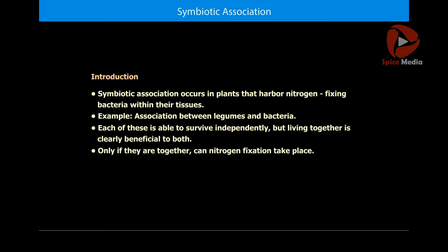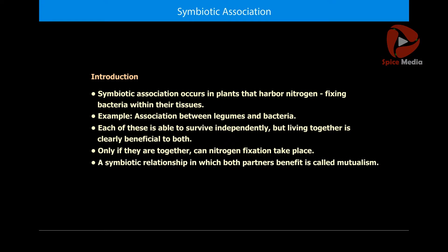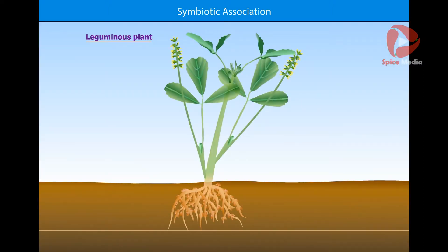Only if they are together can nitrogen fixation take place. A symbiotic relationship in which both partners benefit is called mutualism. Let us understand the symbiotic association with the help of leguminous plants.